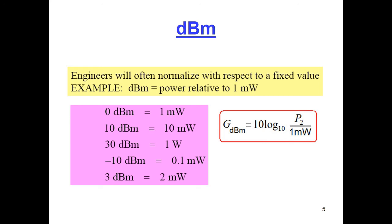And in this case also, if P₂ is one milliwatt, then this will be one and log₁₀ one will be zero. So for one milliwatt P₂, it will be 0 dBm. So whenever it is written as dBm, we should understand that we are comparing with one milliwatt and similarly for other values of P₂.